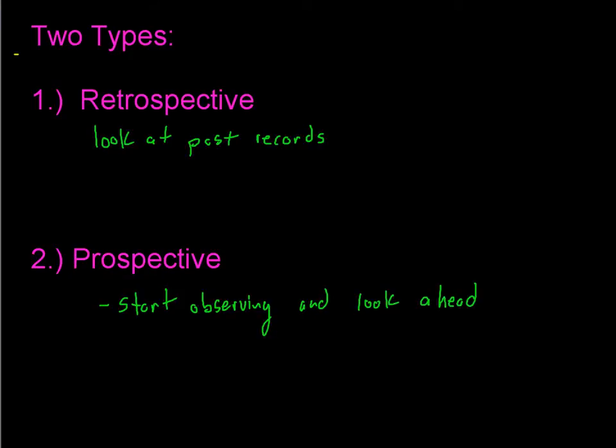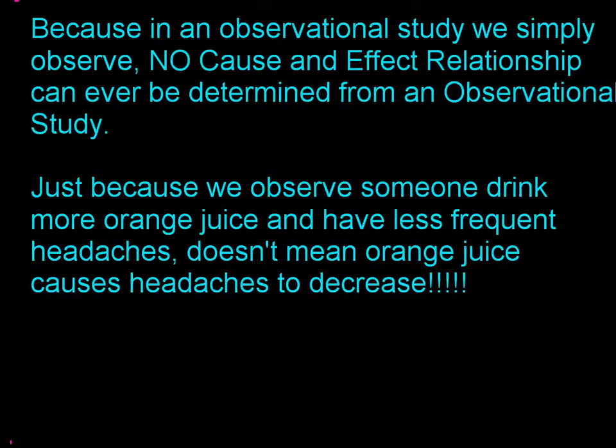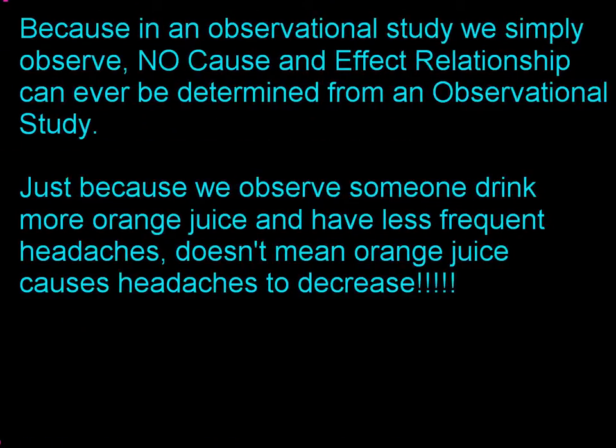The difference is subtle. In a retrospective study, you look at past records to examine something about a sample. In a prospective study, you create that sample and then start observing them now. But remember, in both cases you are simply observing. Because in an observational study we simply observe, no cause-and-effect relationship can ever be determined.